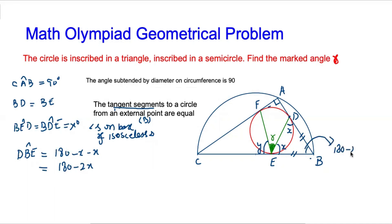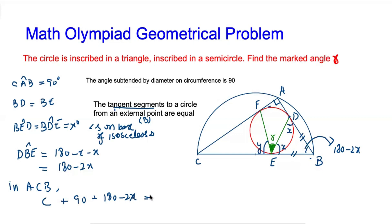Now in triangle ACB, angle A is 90 degrees and angle B is 180 minus 2x. Since the sum of interior angles equals 180, we get: 90 plus (180 minus 2x) plus angle C equals 180. Therefore angle C equals 2x minus 90 degrees.